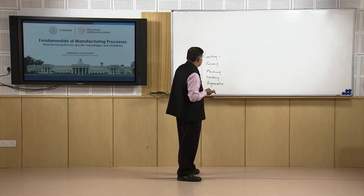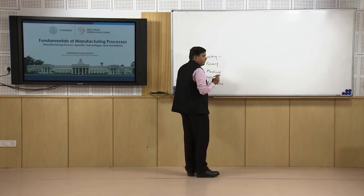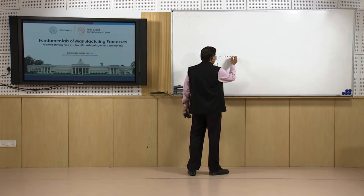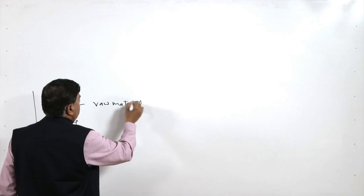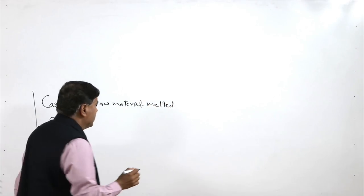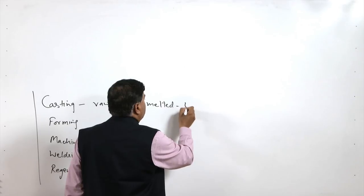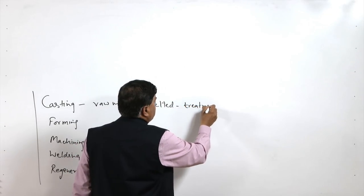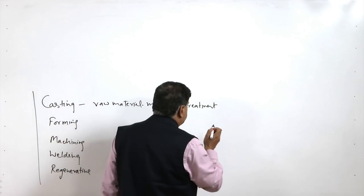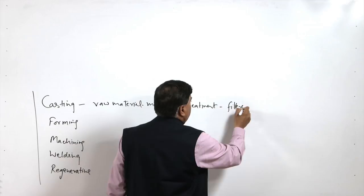In casting processes, what is needed to manufacture a product is that first the raw material is melted. Then to clean the impurities from the molten metal, treatment of the molten metal is carried out — processes like degassing, fluxing, and similar treatments are done.